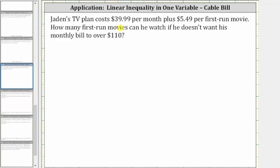Jaden's TV plan costs $39.99 per month plus $5.49 per first-run movie. How many first-run movies can he watch if he doesn't want his monthly bill to be over $110?